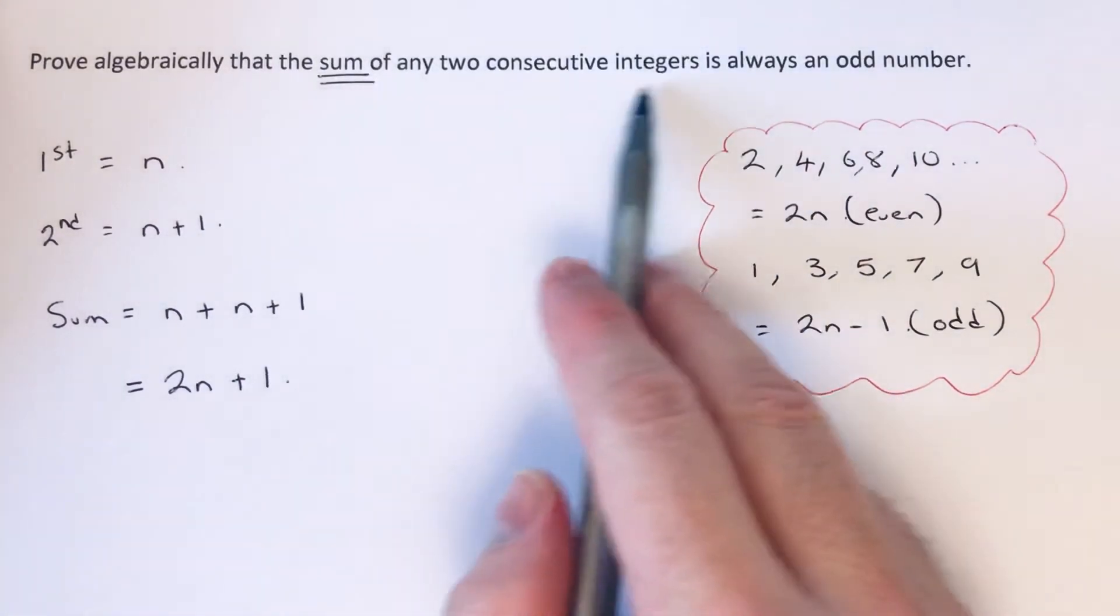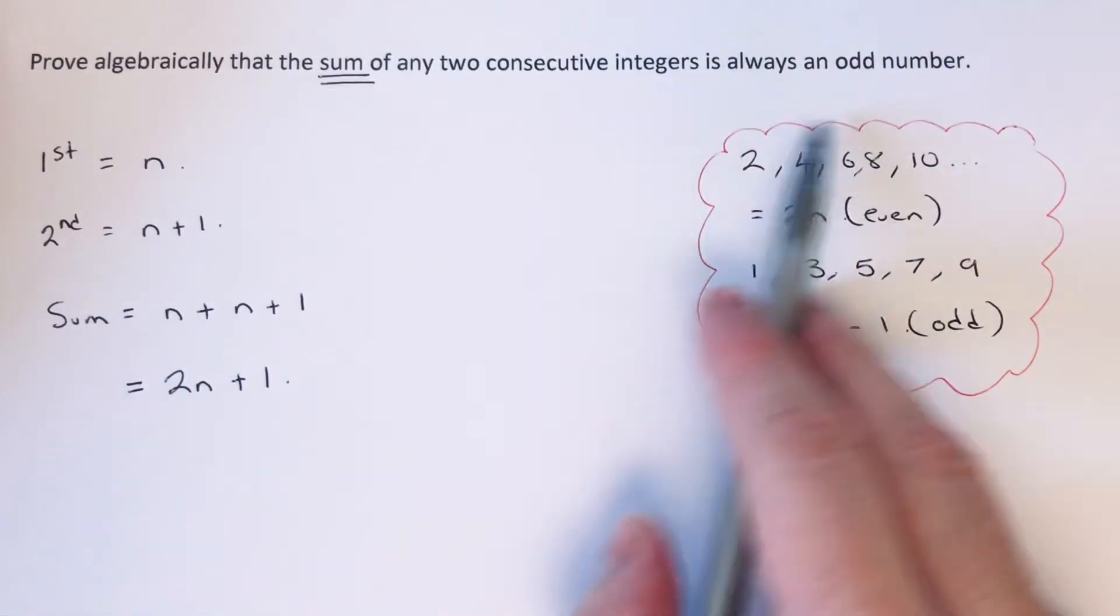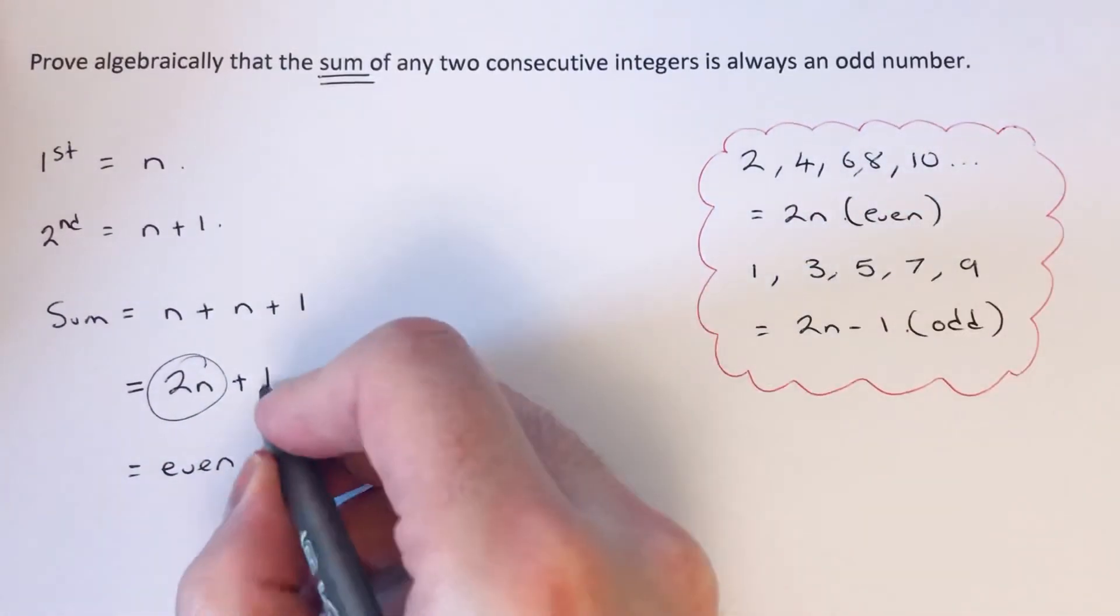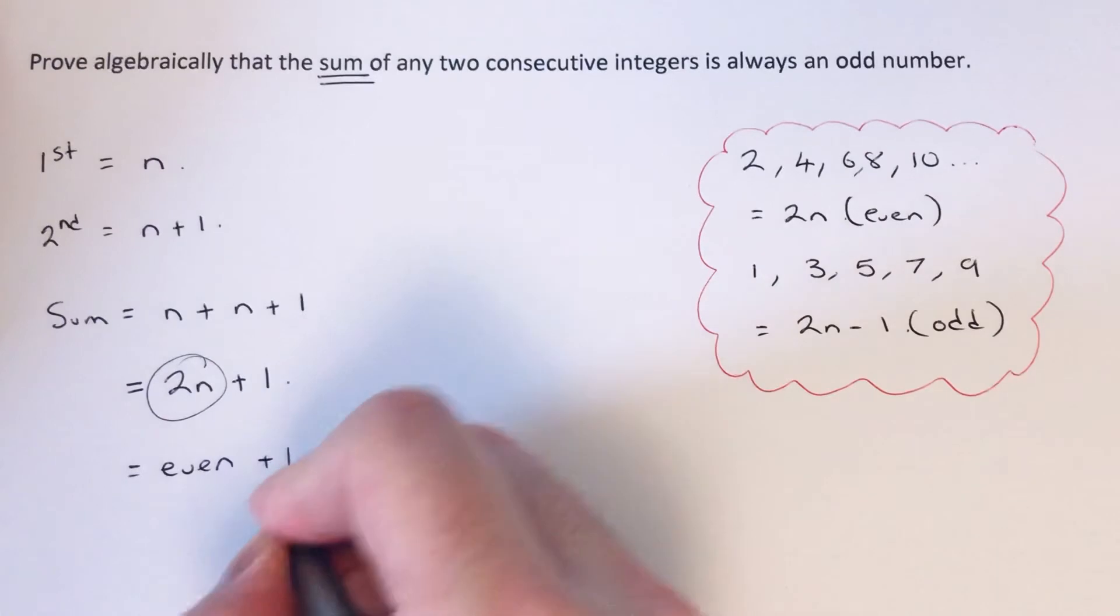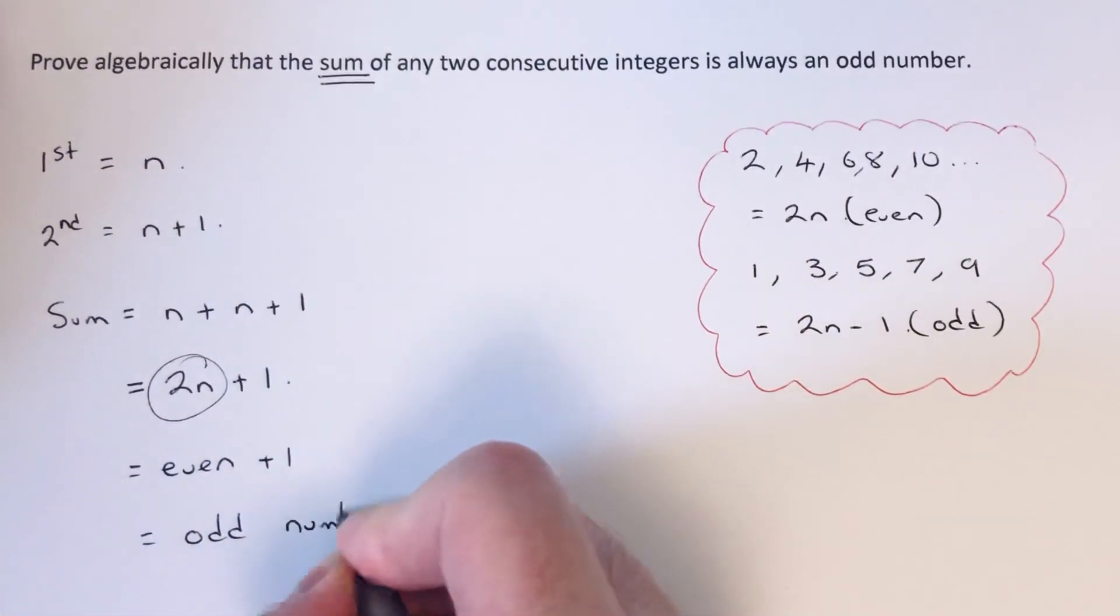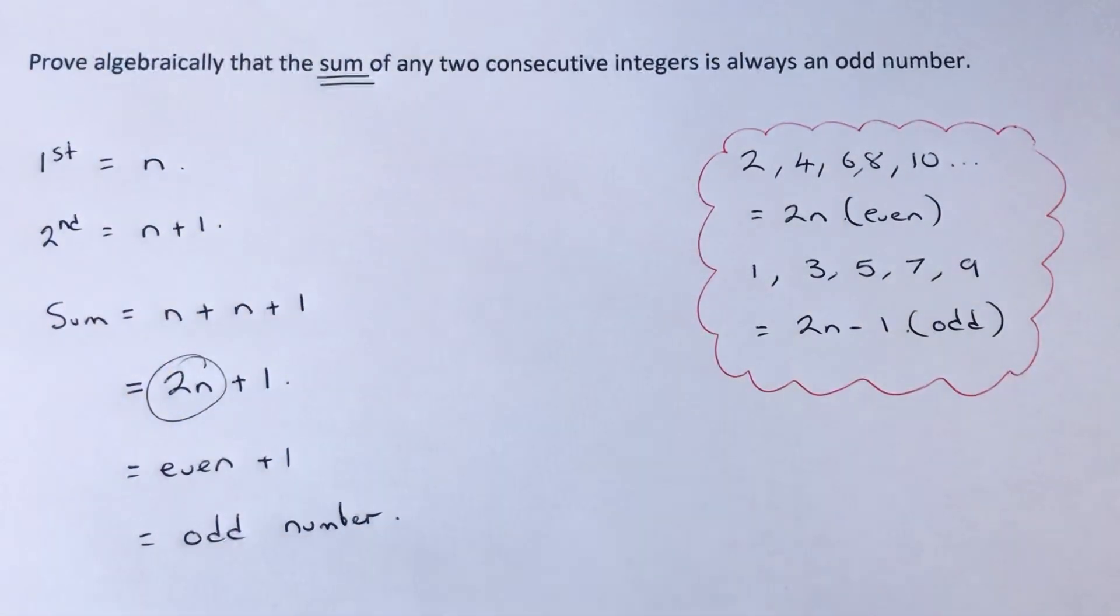Okay, so how does this prove that this is an odd number then? Well, we know this bit is an even number, 2n's even. And if we add 1 to it, we get an odd number as our answer. So we've proved that the sum of any two consecutive integers is always an odd number.